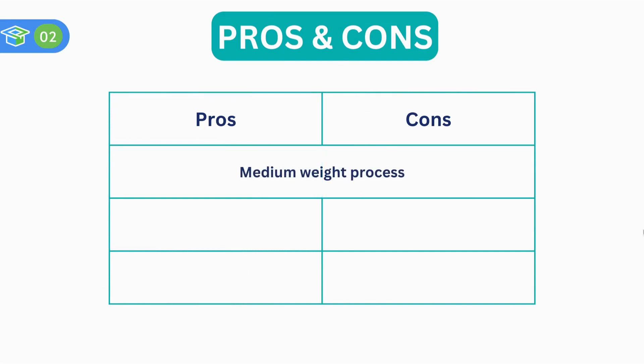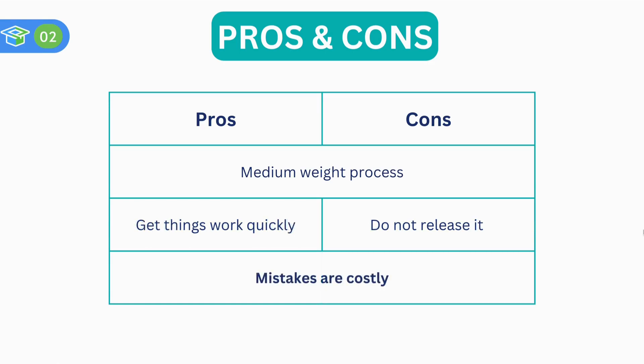Iterative Refinement is neither a heavyweight nor a lightweight methodology. It is a general principle that can be applied to different methods, so it is called a medium-weight process. Iterative Refinement can fix a problem or create something new quickly, but that process will not be released since it has to follow up steps of iterations. Furthermore, mistakes made in the requirements step are the most expensive and costly to the company and the development team.